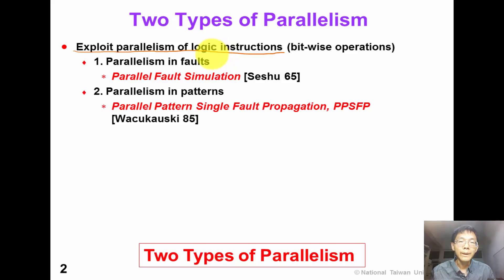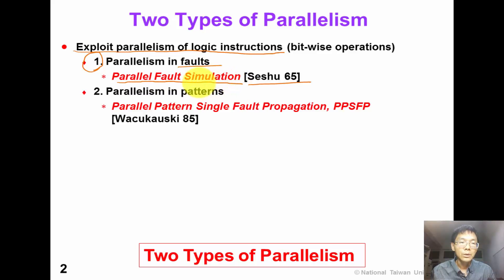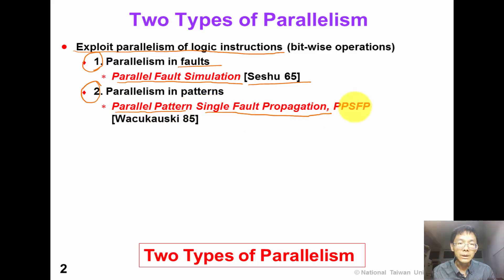There are two types of parallelism. As early as 1965, Zu proposed a parallel fault simulation in terms of faults — it is called parallel fault simulation. Twenty years later, Dr. Wojcikowski proposed another parallelism in terms of patterns, called parallel pattern single fault propagation, or PPSFP in short. In this video, we will introduce these two types of parallelism.